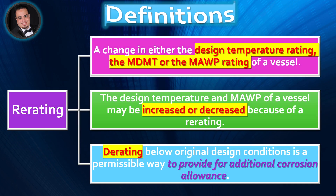Re-rating is a change in either the design temperature rating, the minimum design metal temperature, or the maximum allowable working pressure rating of a vessel. The design temperature and maximum allowable working pressure of a vessel may be increased or decreased because of a re-rating. De-rating below original design conditions is a permissible way to provide for additional corrosion allowance.